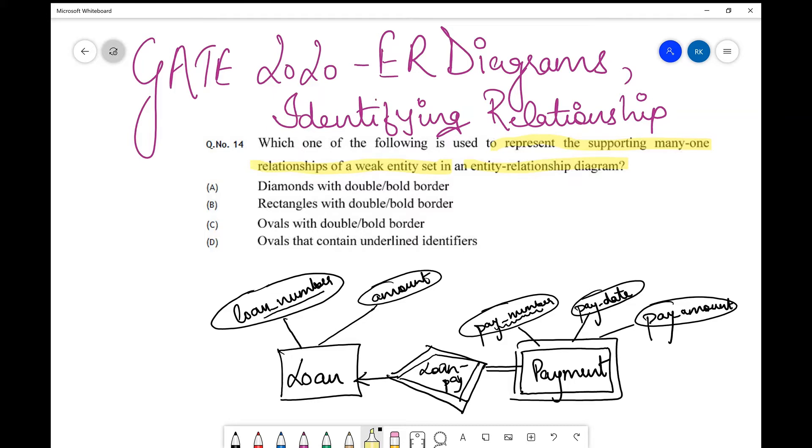For the context of this question, I have taken the same example as discussed in the previous video: loan and payment, these are two entity sets. In a particular loan payment system, if you consider that a person is requesting for a loan and there is a certain payment number, payment date, and payment associated with the loan granted.